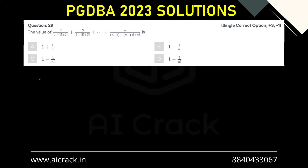Let's solve question number 29. We have to find out a summation of this series where the general term Tn equals n upon n minus 2 factorial plus n minus 1 factorial plus n factorial.